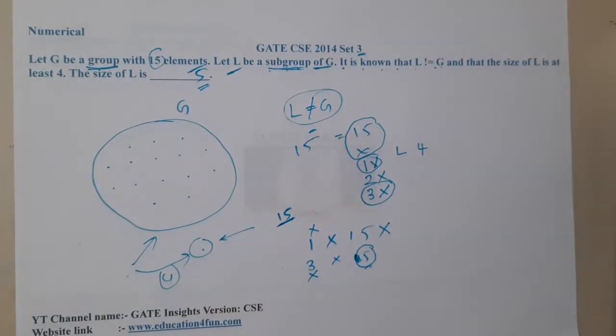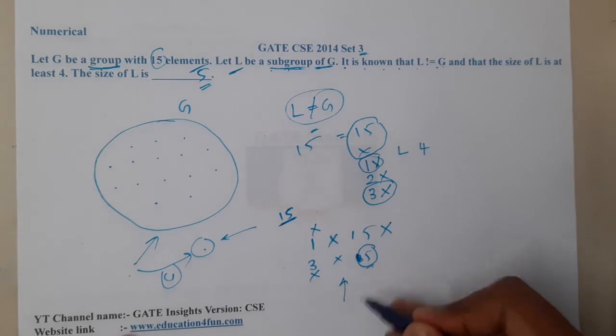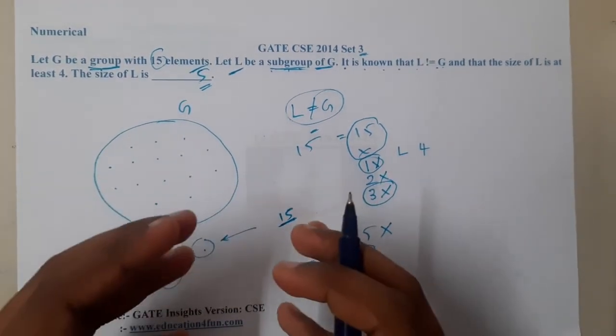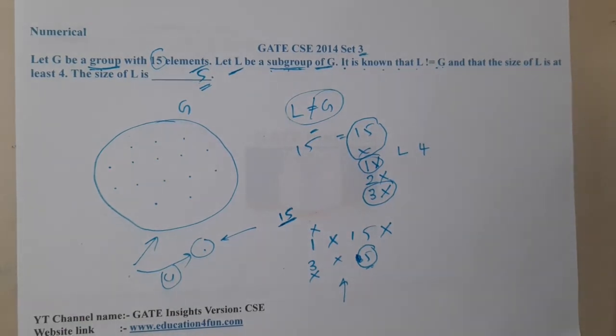So this is a direct question based on Lagrange's theorem. This is what the theorem says: if there is a group and you want a subgroup from it, it should be a factor of it. I hope everyone got a clear idea on this. In the next lecture, let us continue with the next question.